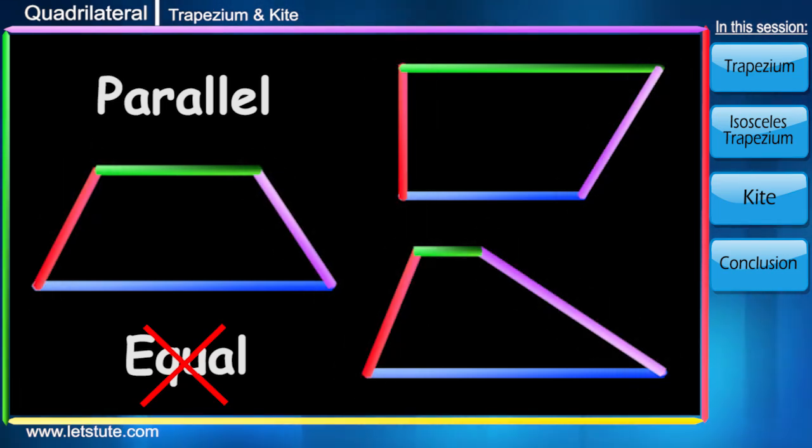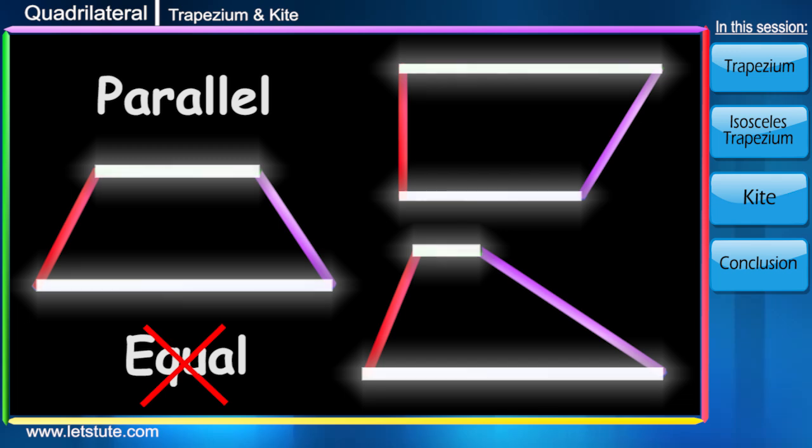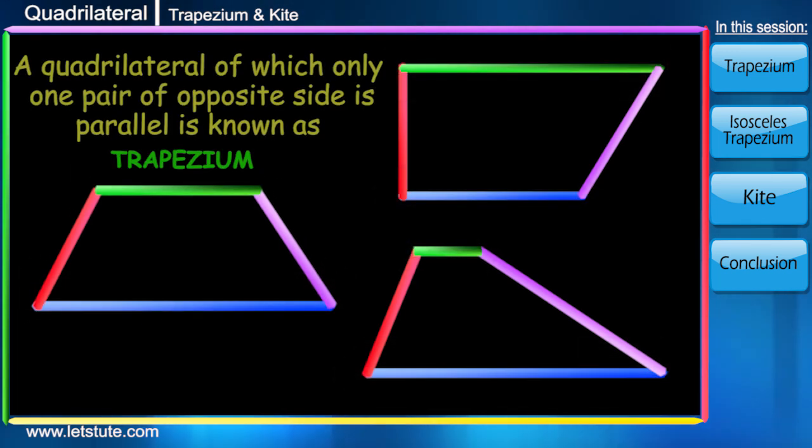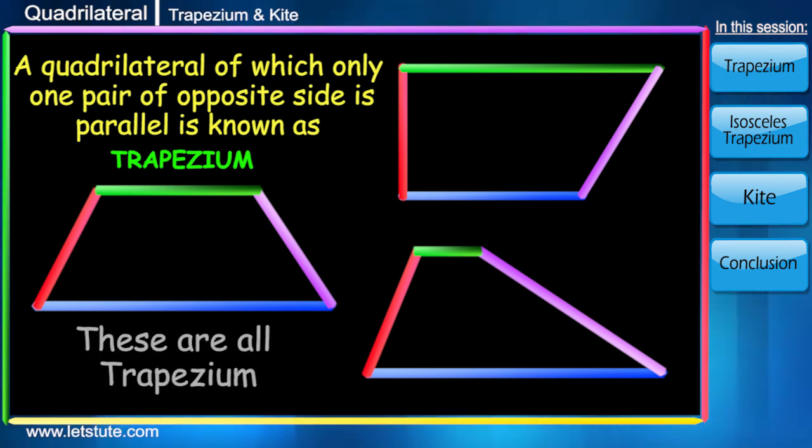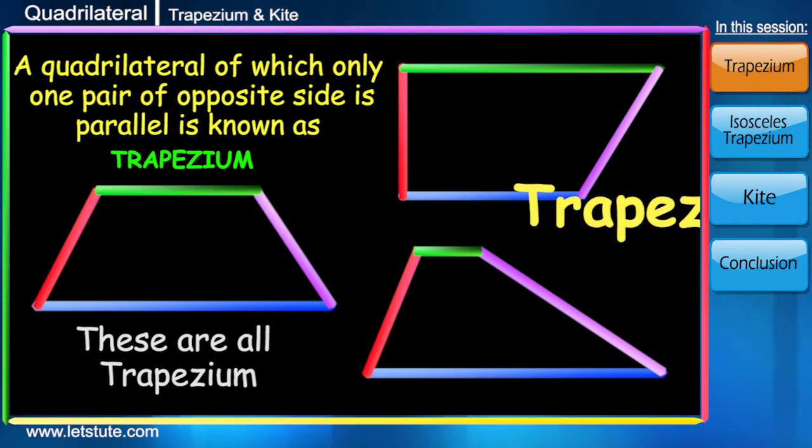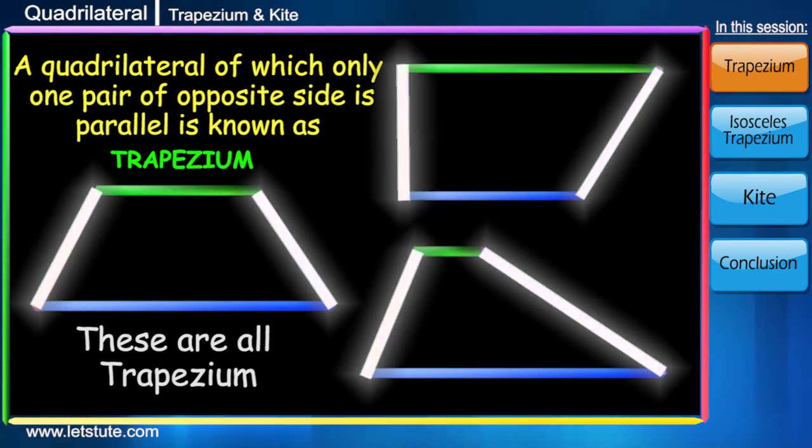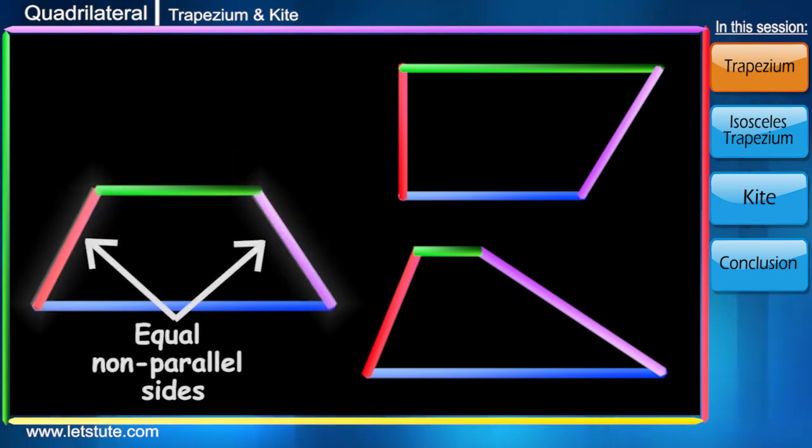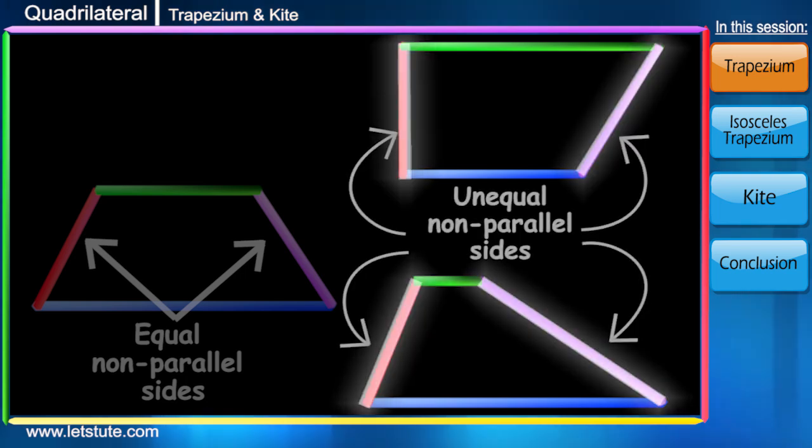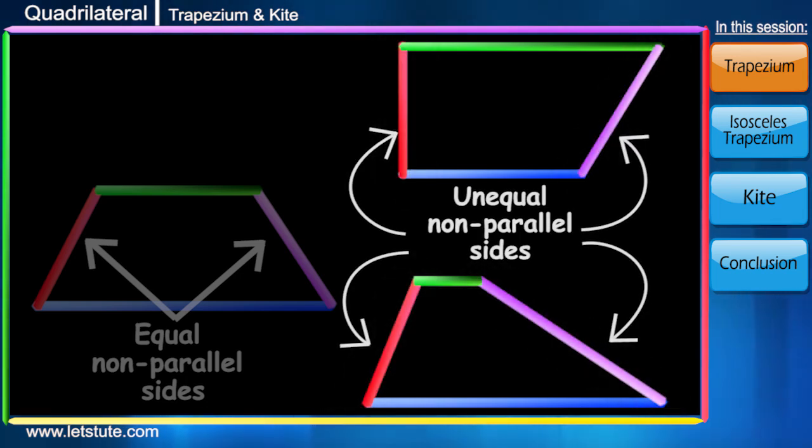Friends, do not get confused between parallel sides and equal sides. In geometry, a quadrilateral whose only one pair of opposite sides is parallel is known as trapezium. Some call it trapezoid as well. These non-parallel sides may be equal like in our first diagram or may not be equal like in other two diagrams.